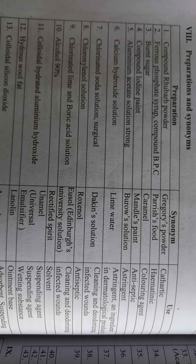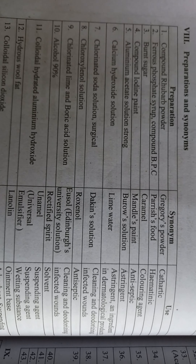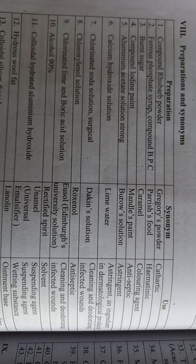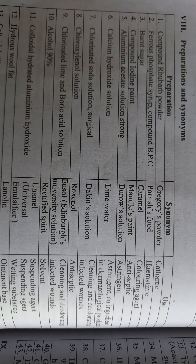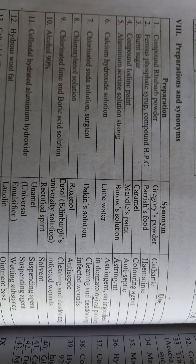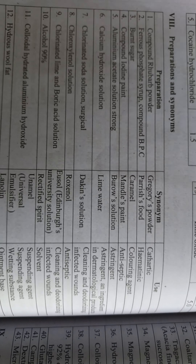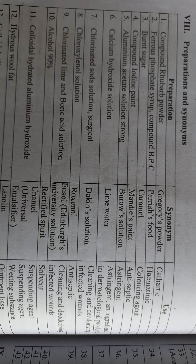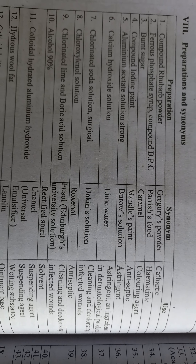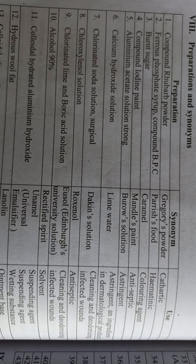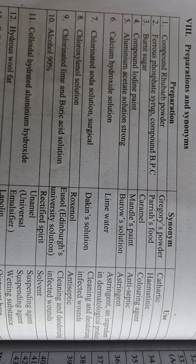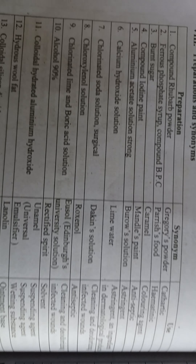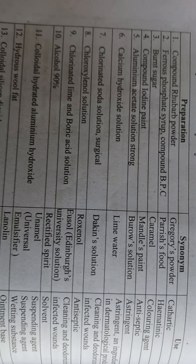In today's video we'll take a look at preparations and synonyms. Compound rhubarb powder, also known as Gregory's powder, is a cathartic. Ferrous phosphate syrup, compound BPC, synonym Parish's food, use: hematinic.